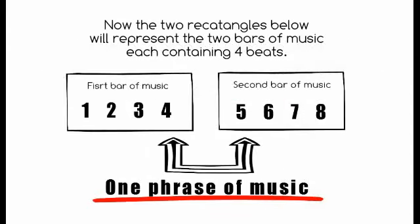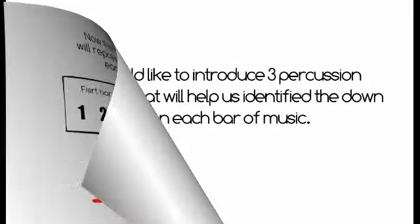The two rectangles below will represent the two bars of music, each containing four beats. The first bar of music will contain beats 1, 2, 3, and 4, and the second bar of music will contain beats 5, 6, 7, and 8. Putting the two bars together makes one phrase of music.